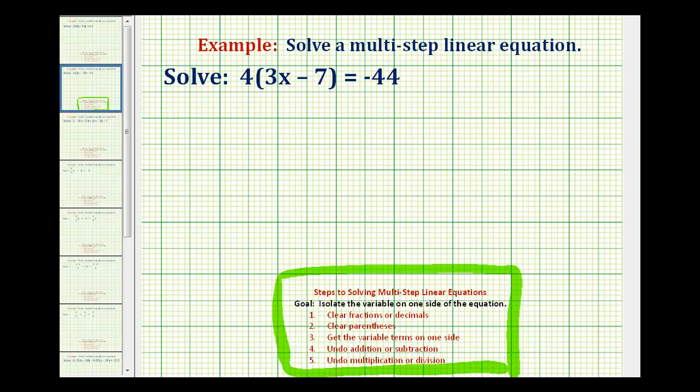The main goal in solving a linear equation is to isolate the variable on one side of the equation or one side of the equal sign. Looking at our equation, the first step is going to be to eliminate the parentheses by distributing the four.